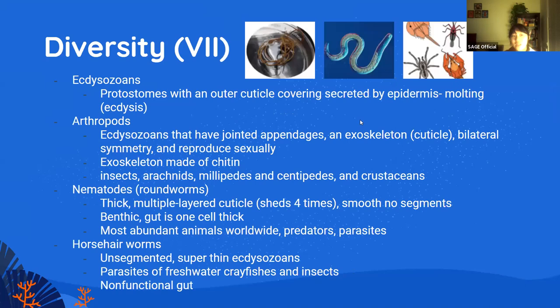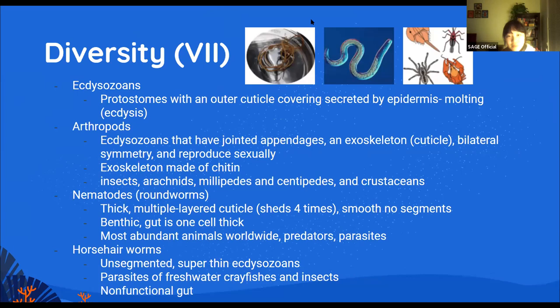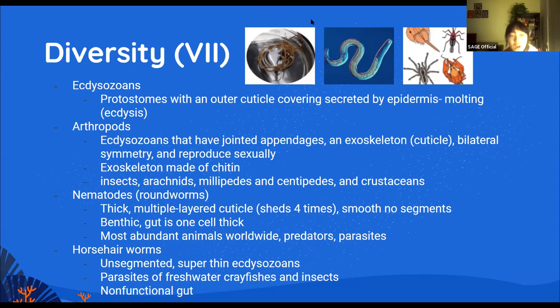Ecdysozoans are protostomes with an outer cuticle covering that prevents water loss and protects them. This cuticle is secreted by the skin, and they have to undergo a molting process also known as ecdysis — they shed their skin. Arthropods are animals that shed their skin and also have jointed appendages. They have an exoskeleton (the cuticle), are bilaterally symmetrical, and reproduce sexually. They include insects, spiders, millipedes, centipedes, and crustaceans — which includes isopods.